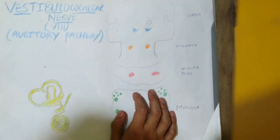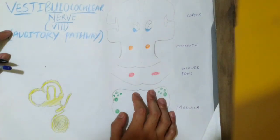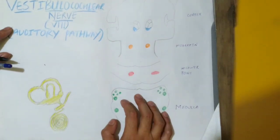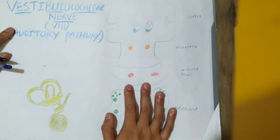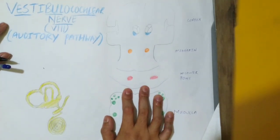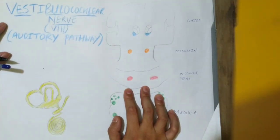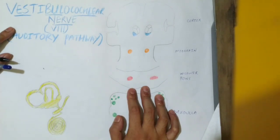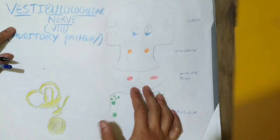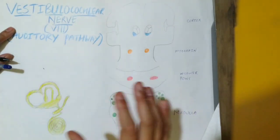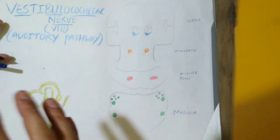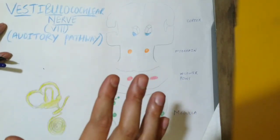Hello everyone, this is Suyash here. In this video we are going to discuss about our 8th pair of cranial nerve in the peripheral nervous system. We are going to discuss the basic overview of our vestibulocochlear nerve and go into detail about our auditory pathway.